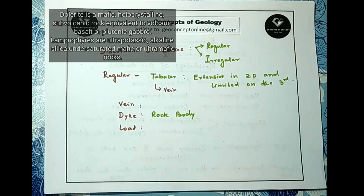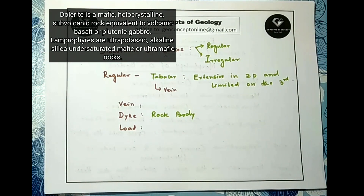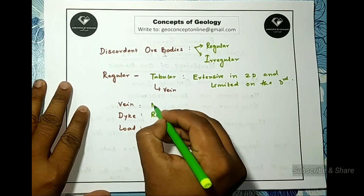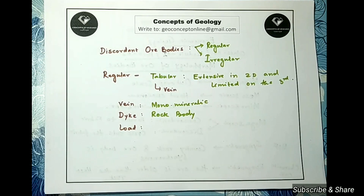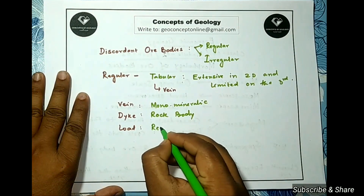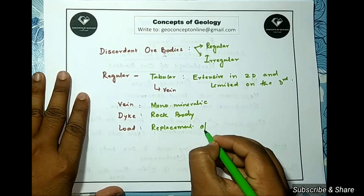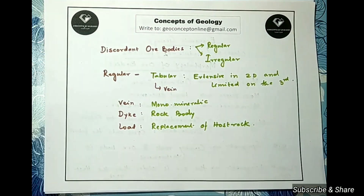There are genetic differences between veins, lodes, and dikes, not just morphological ones. Dikes form due to intrusion of magma through fractures or joints — a dike is a rock body, for example a dolerite dike or lamprophyre dike found in tensional cracks of Gondwana rocks. Veins are monomineralic, for example quartz veins or calcite veins, resulting from percolating hydrothermal fluids that infill fractures. Lodes are of entirely different origin — they form due to extensive replacement of the host rock, for example the Champion Lode in the Kolar Gold Field.